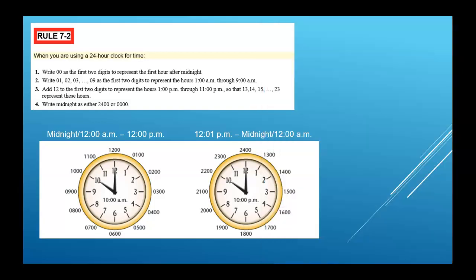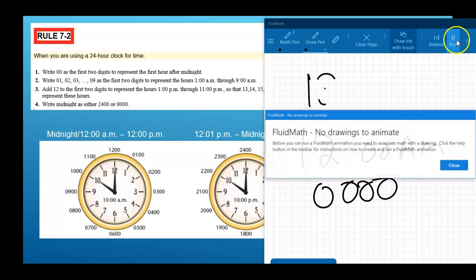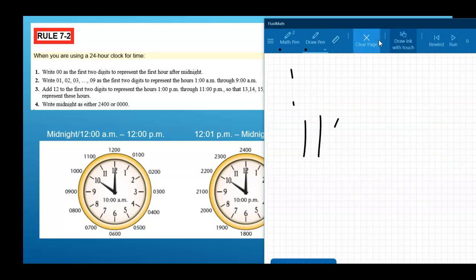And then your morning hours, 0100, 0200, 0300, 0400, 0500, 0600, 0700, 1100. So 1100 is 11 o'clock in the morning. 1159 is a morning hour, right before noon.